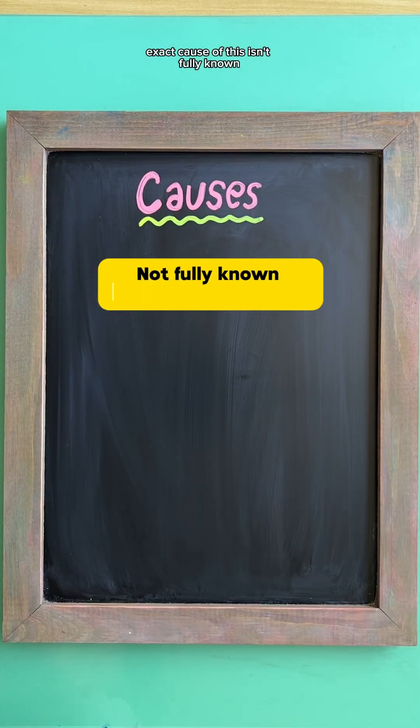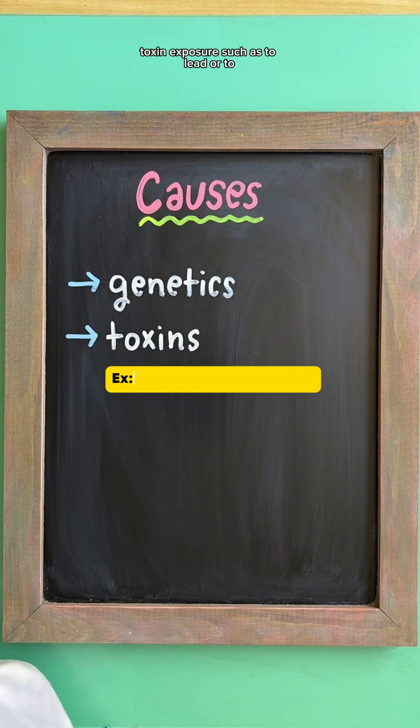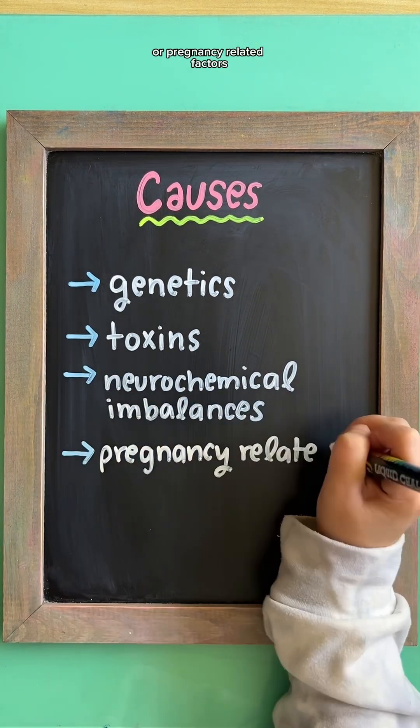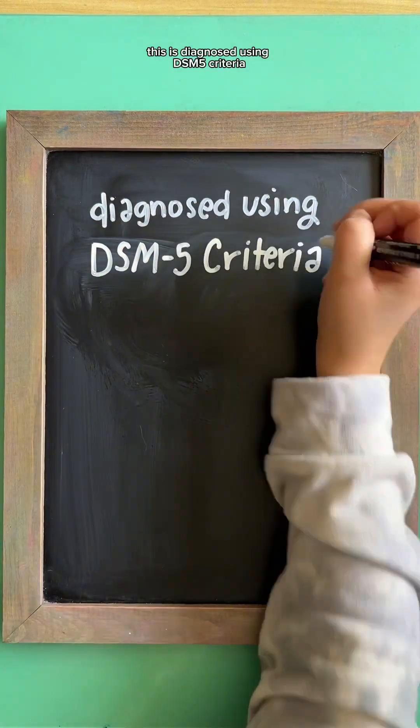The exact cause isn't fully known, but some risk factors thought to be associated with it are genetics, toxin exposure such as to lead or secondhand smoke, neurochemical imbalances, or pregnancy-related factors such as substance use or nutritional deficiencies while pregnant. This is diagnosed using DSM-5 criteria.